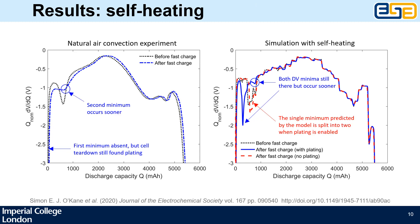The natural air convection experiment had a dynamic temperature profile. Unlike the experiment, you do see both dV minima after the fast charge in the model, but it's very instructive as to what's actually going on. What's happening is the single minimum predicted by the model with plating disabled is split into two when plating is enabled, and we're going to look into why that is.